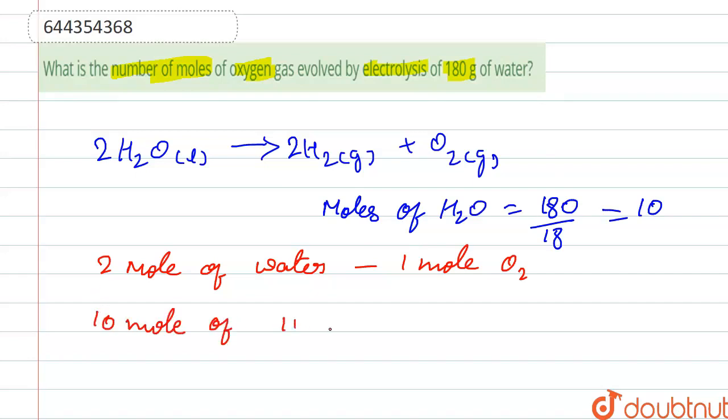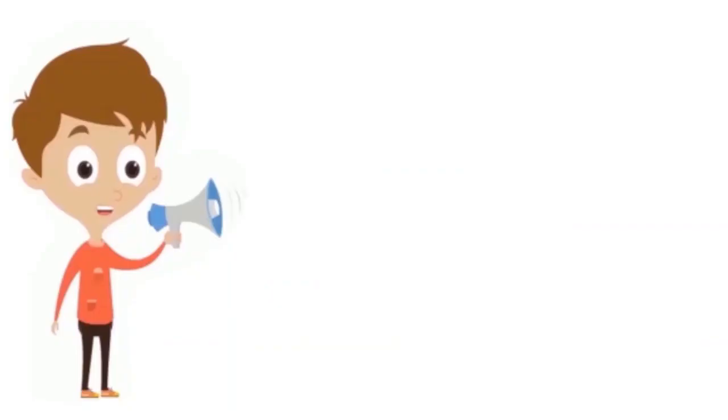So 10 moles of water evolved 1 by 2 into 10, that is 5 moles of oxygen. 5 moles of oxygen for 10 moles of water. Thank you.